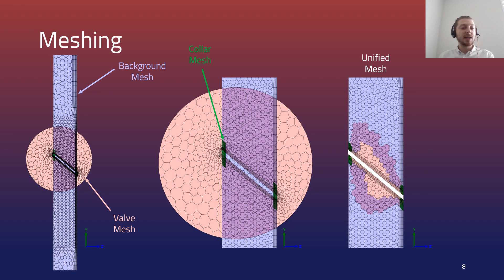The domain was meshed with a mix of polyhedral and hexahedral elements with inflation layers used on the wall surfaces to capture the boundary layer.